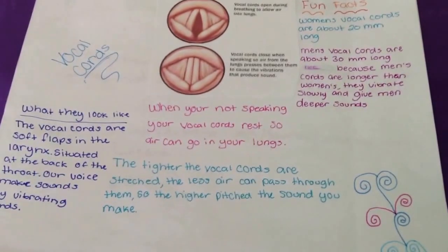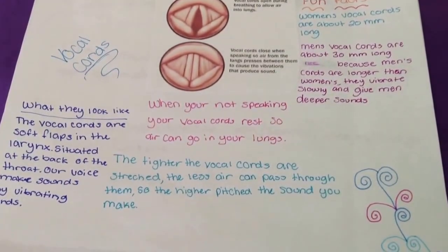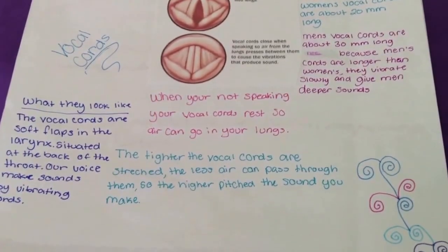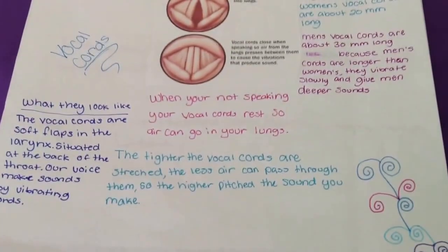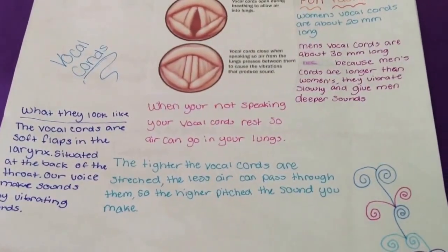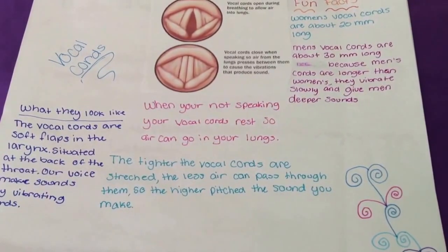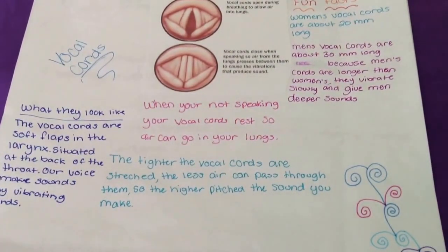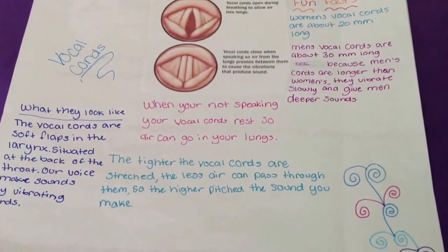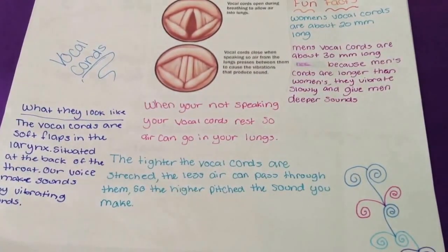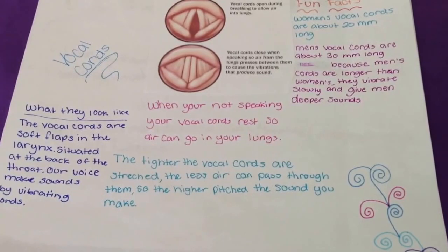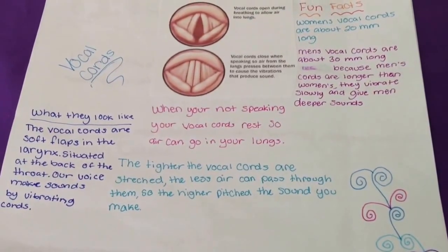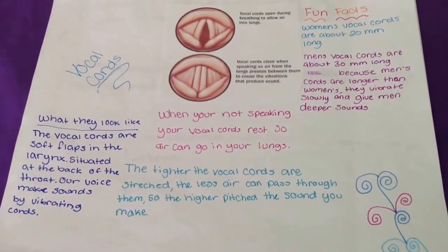Vocal cords are open during breathing to allow air into the lungs. Vocal cords close during speaking, so air from the lungs presses between them to cause the vibrations that produce sound. The vocal cords are soft flaps in the larynx, situated at the back of the throat. A voice makes sound by vibrating cords. Women's vocal cords are about 20 millimeters long, and men's vocal cords are about 30 millimeters long. Because men's cords are longer, they vibrate more slowly and give men deeper sounds.